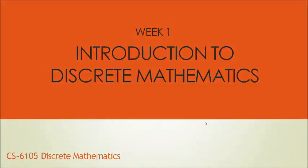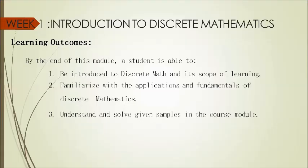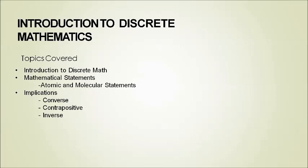The topic for week one is the review or recap from Discrete Structures One, which covers discrete mathematics. The learning objectives for this subject are: by the end of this module, a student is able to be introduced to discrete math and its scope of learning, familiarize with the applications and fundamentals of discrete mathematics, and understand and solve given samples in the course module.